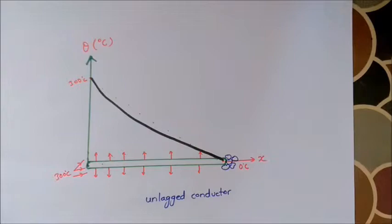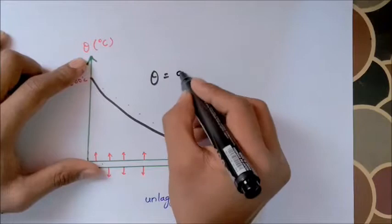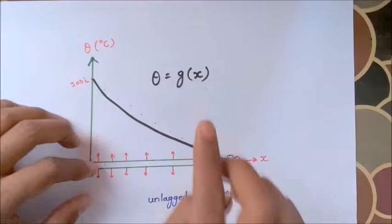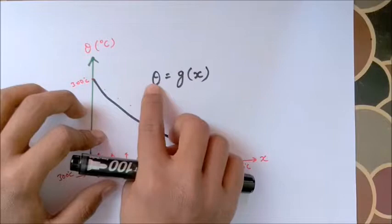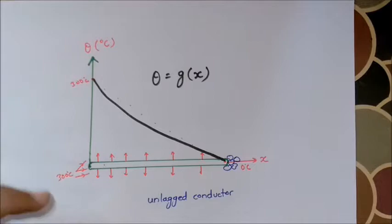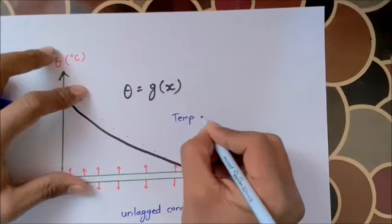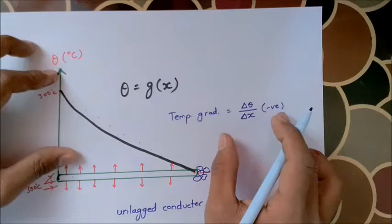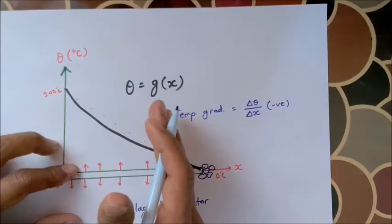This gradient changes when we introduce a new function. This function means theta is some new function g of x. Now the function is f of x. What is the function with convection? This is a new function, g of x. This is the x-dependent variable and x-domain. In this case, it will be the gradient — the temperature gradient, delta theta over delta x — and in this case it will be negative. This is the same as what you can see for the temperature gradient.